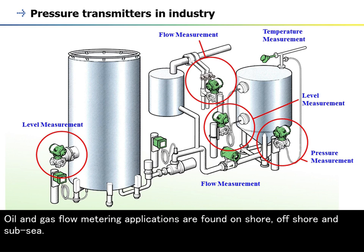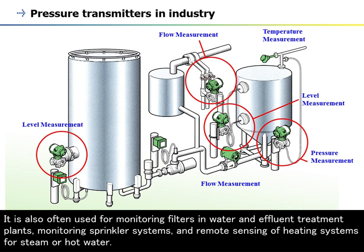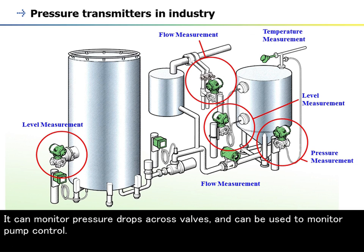Oil and gas flow metering applications are found onshore, offshore, and subsea. They are also often used for monitoring filters in water and effluent treatment plants, monitoring sprinkler systems, and remote sensing of heating systems for steam or hot water. They can monitor pressure drops across valves and can be used to monitor pump control.